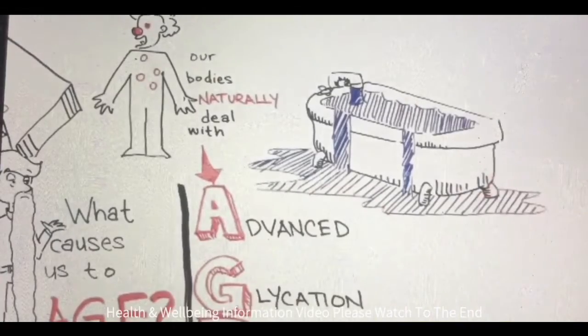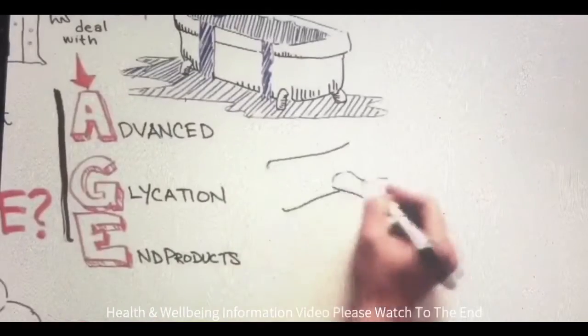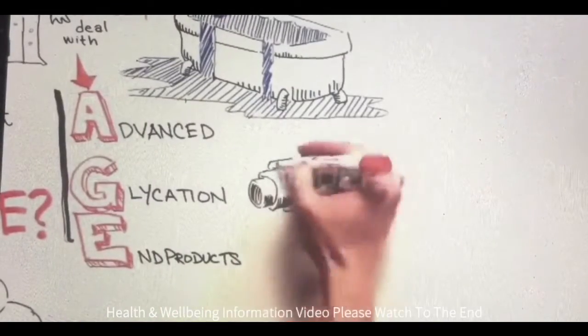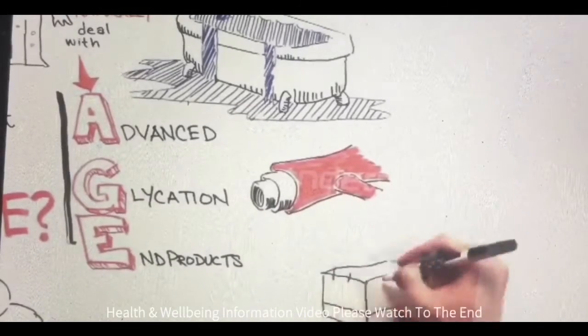your body can dispose of them, then they overwhelm your body and can lead to some serious damage both inside and out. AGEs are one of the causes for our aging. These harmful compounds can affect arteries, making them stiff